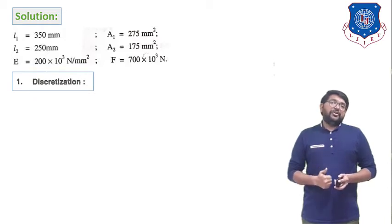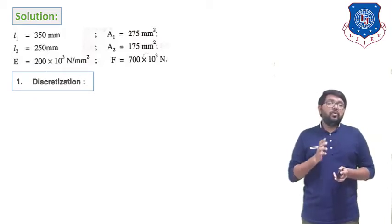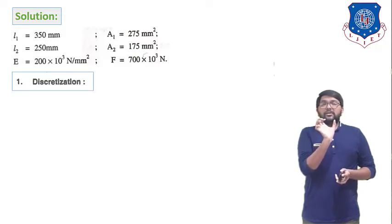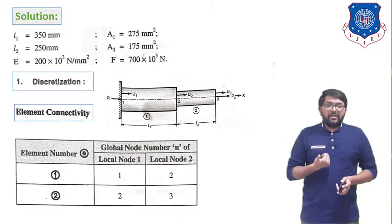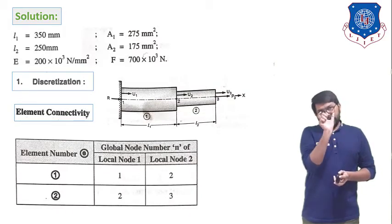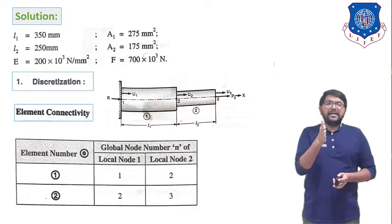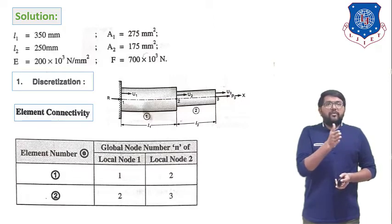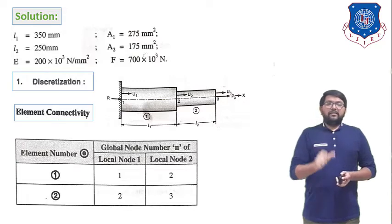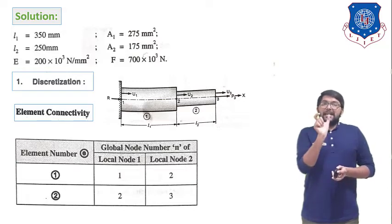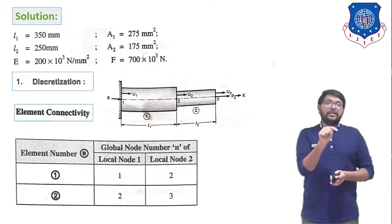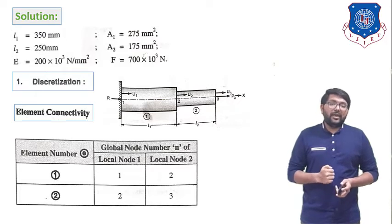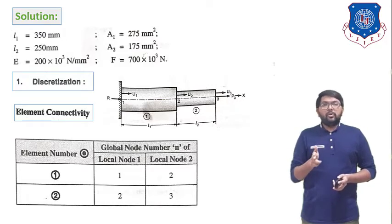Step 1 is discretization. We identify the total number of nodes available in this system — there are 3 nodes total — and define element connectivity. Node 1 is fixed, node 2 is the middle node, and the force is applied at node 3. Element 1 is mounted between nodes 1 and 2; element 2 is mounted between nodes 2 and 3, as shown in the figure.